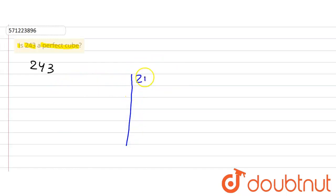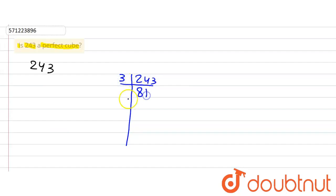There is 243. We will divide it only by prime factors. If we divide it by 2, it's not possible. So first we will try 3 — yes, it's divisible by 3. So 3 multiplied by 81 is 243. Again it will be divisible by 3: 3 multiplied by 27 is equal to 81.